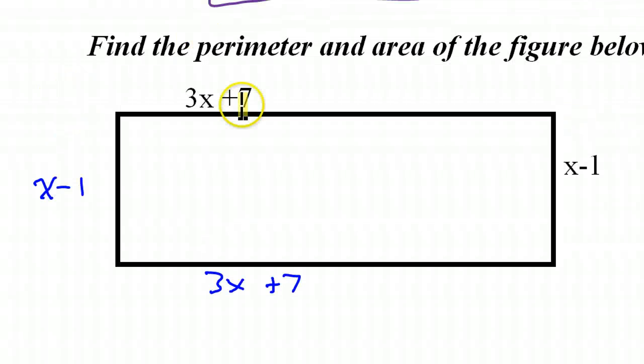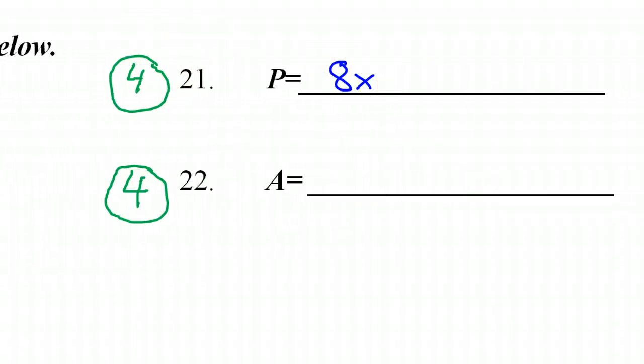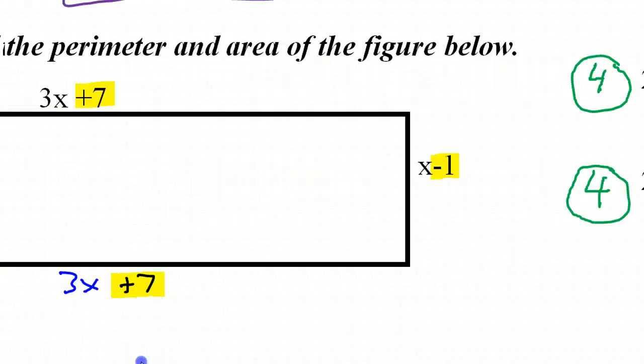Now let's add up the constants. You have 7 and 7. That's 14. And then we have minus 1. So that's 13. Minus another 1. So that's 12. So that means 8x plus 12. All right. That's the perimeter. We just added them all up.